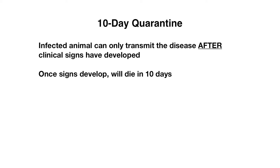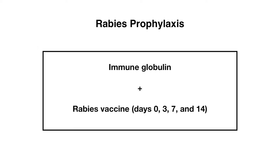If you need to give a patient rabies prophylaxis, it's done through immune globulin, which is given intramuscularly and is usually thoroughly infiltrated in the area around and into the wound. The patient must also receive a rabies vaccine, which is actually a series of vaccines — on day 0, day 3, day 7, and then day 14 in order to complete the full series.